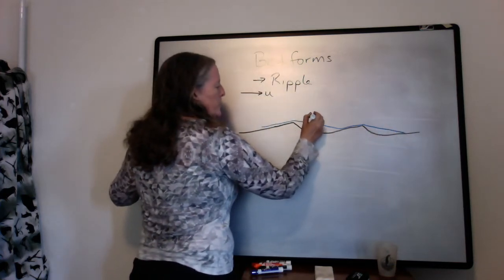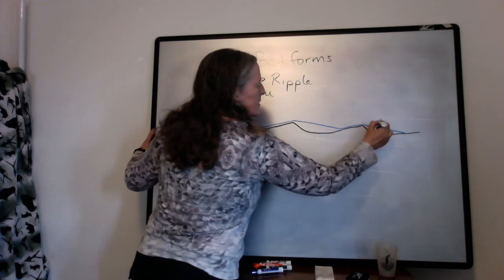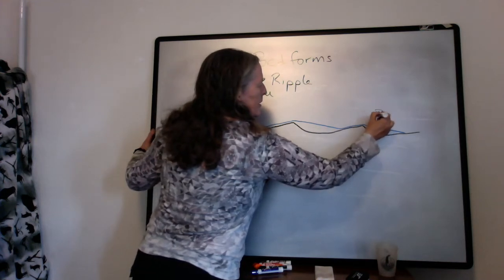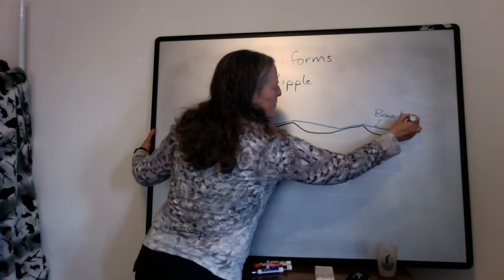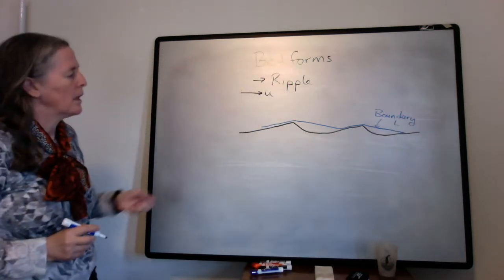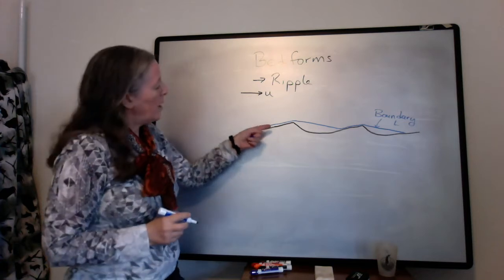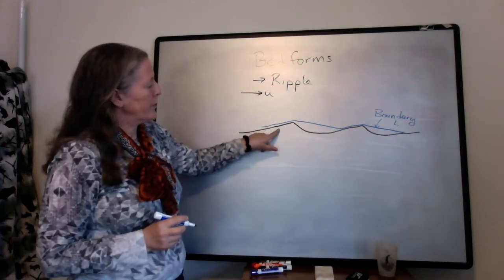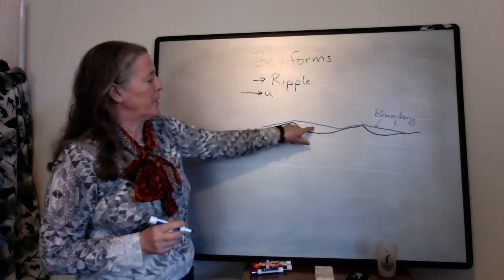This blue line represents the boundary layer. There are places where the boundary layer is very close to the bed and places where it's not.